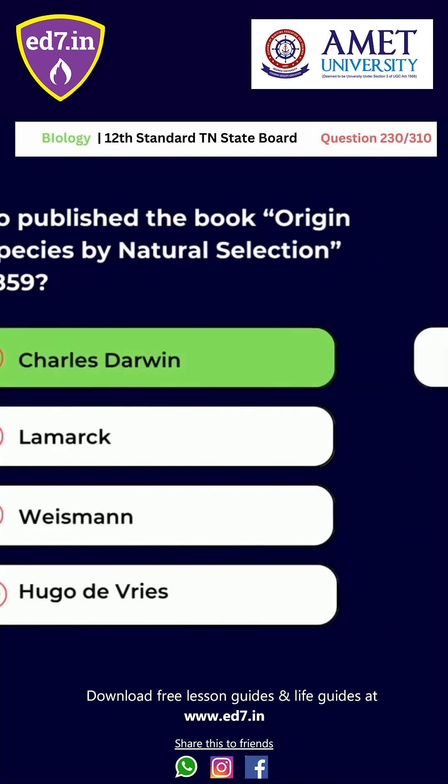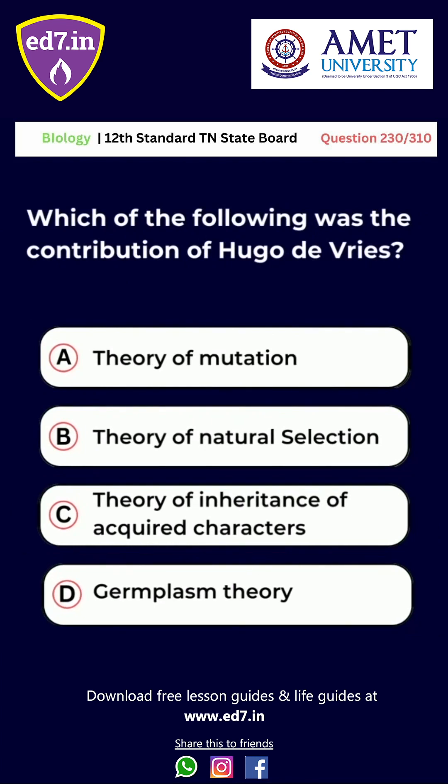Question number 230: Which of the following was the contribution of Hugo de Vries? A. Theory of mutation. B. Theory of natural selection. C. Theory of inheritance of acquired characters. D. Germplasm theory. The right answer is option A, theory of mutation.